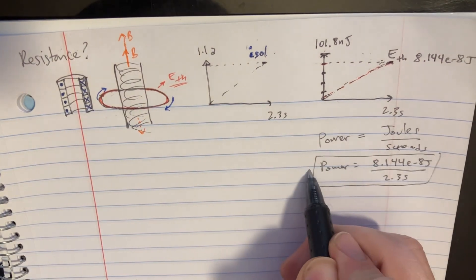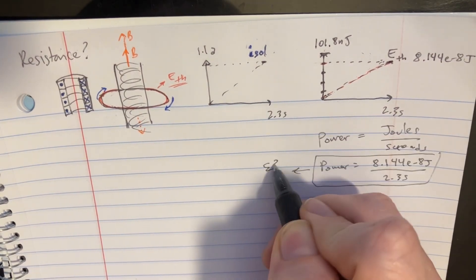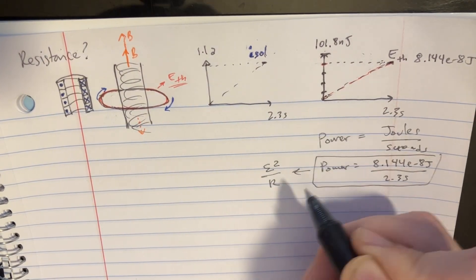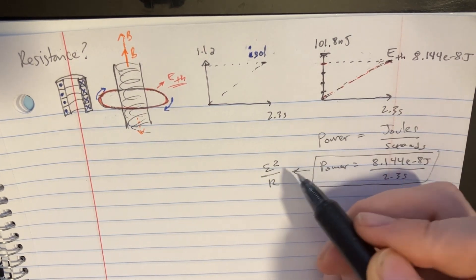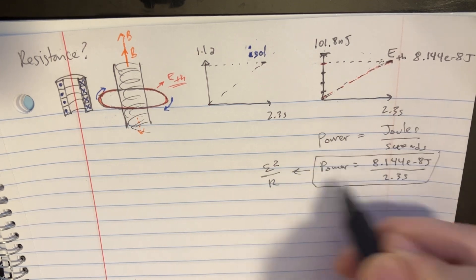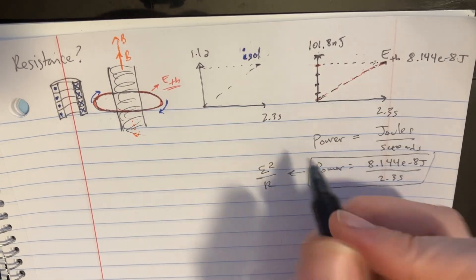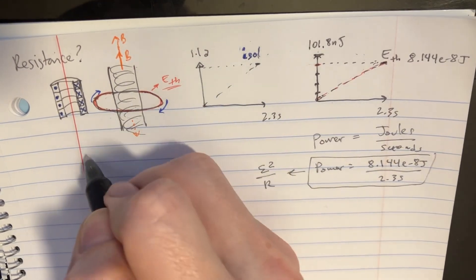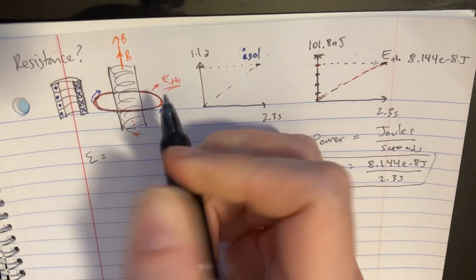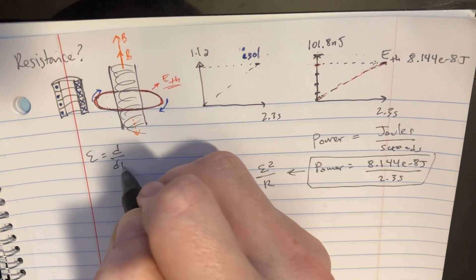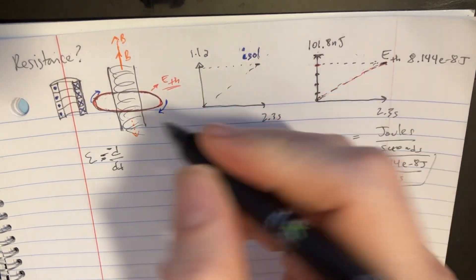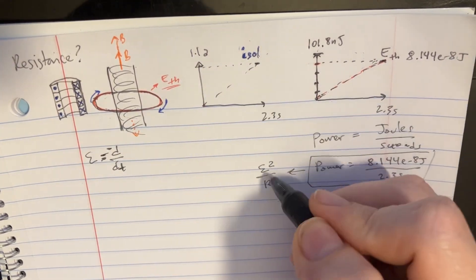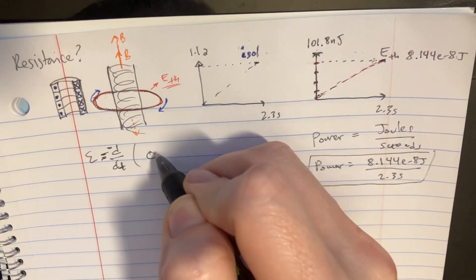So we get some crazy number but I'll just put 8.144 e to negative eight joules over 2.3 seconds, and that's essentially what we would have for power. We should also know that power is going to be equal to E squared over R - this is EMF or voltage squared over R. This is just some equations we should know about power.